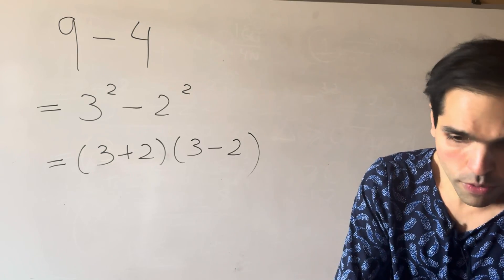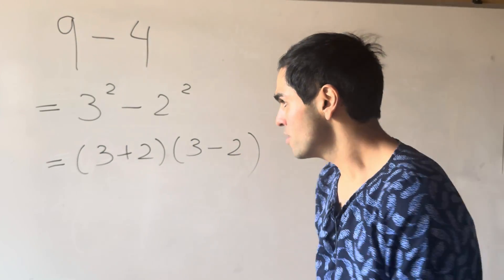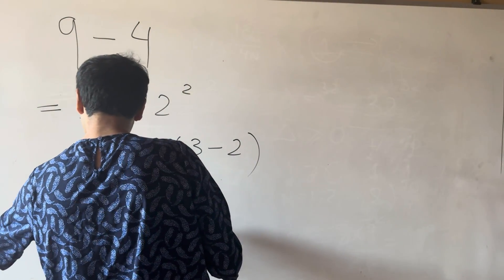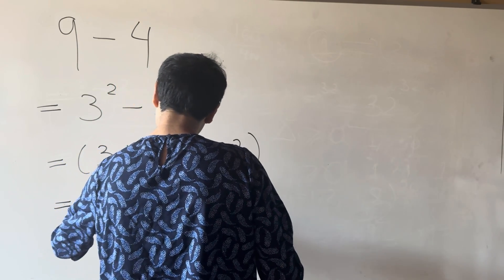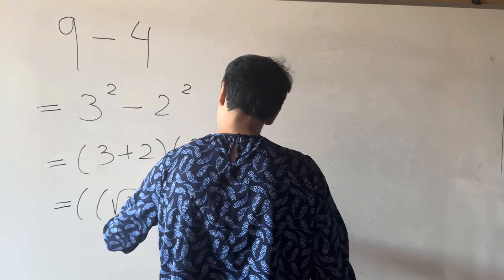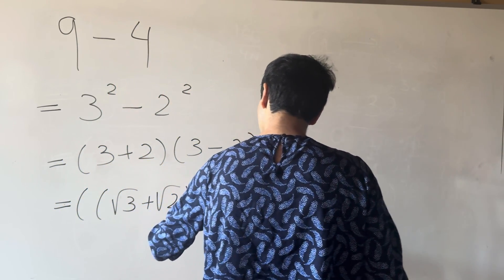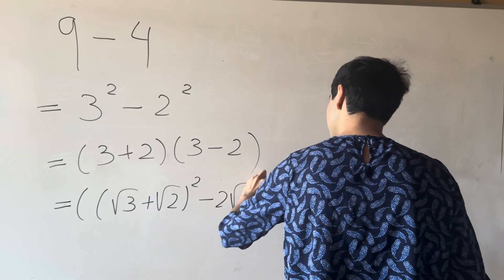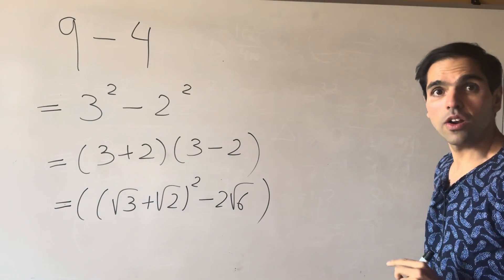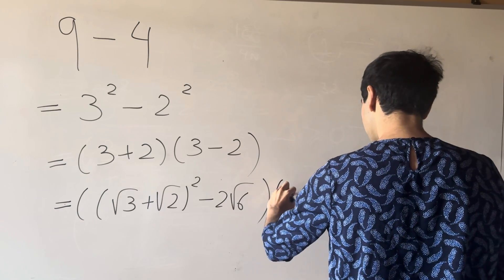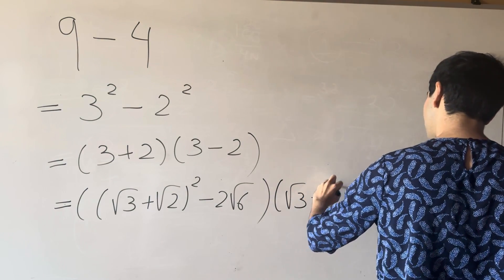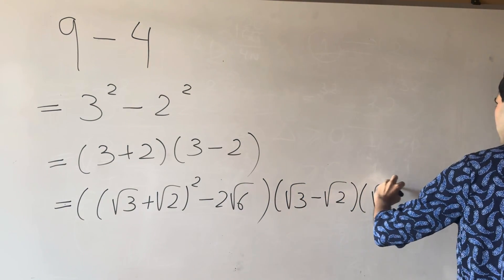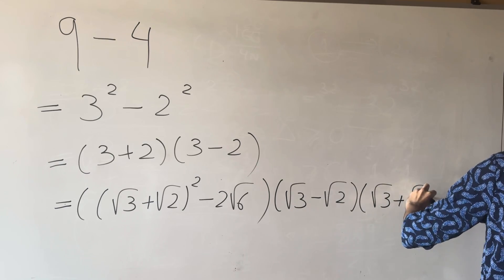And here what we can do, we can complete the square. So this becomes square root of 3 plus square root of 2 squared minus 2 square root of 6. And here we can also use a difference of squares. So it's square root of 3 minus square root of 2 times square root of 3 plus square root of 2.